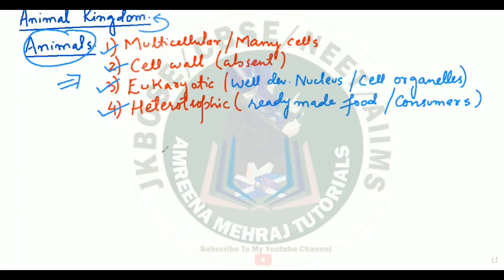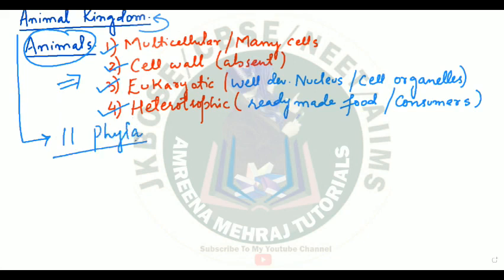We have millions of organisms on the surface of the earth and we cannot study them individually. So we have placed all animals in the bigger group called Animal Kingdom, which has been divided into 11 different phyla. We will be discussing each and every phylum in detail.